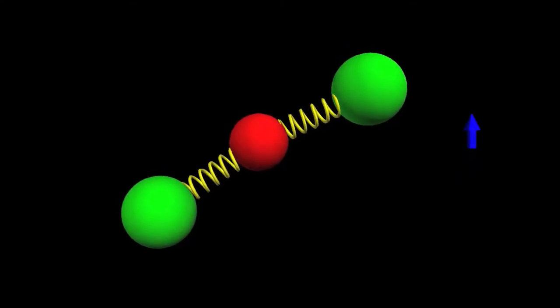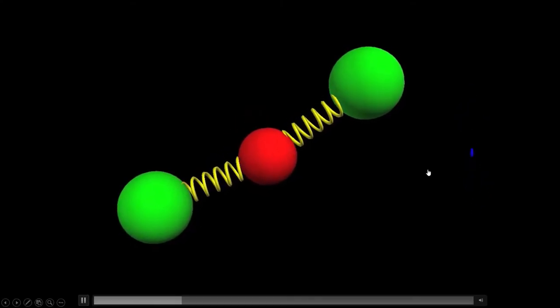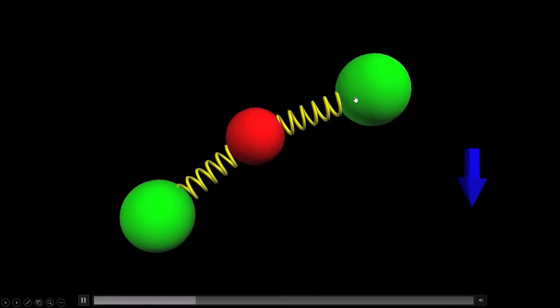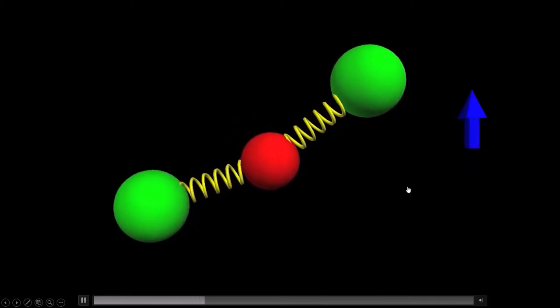The electric field pulls a positive charge one way and the negative charge the other way. Because of the bonding, the positive and negative charges are at opposite ends, and it sets the whole thing vibrating.